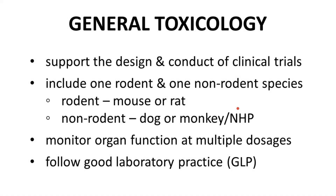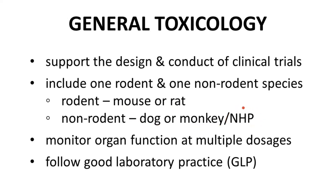General toxicology studies support the design and conduct of human trials. The animal species studied normally include one rodent and one non-rodent species. The rodent is typically either the mouse or rat, most often the rat. The non-rodent species is typically either the dog or monkey, also called NHP — non-human primate. Keep in mind that these studies are to help inform safety risks in humans, so the animal species in the studies are selected based on how closely relevant biological pathways align with humans.